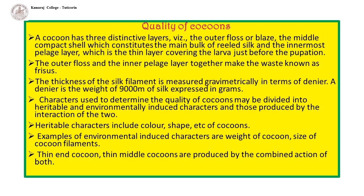The thickness of the silk filament is measured gravimetrically in terms of denier. A denier is the weight of 9,000 meters of silk expressed in grams.